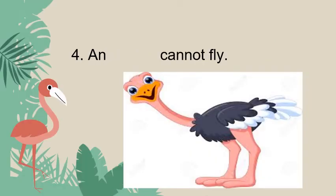Number four: A dash cannot fly. You can see this bird and easily guess the name. Yes — an ostrich cannot fly.